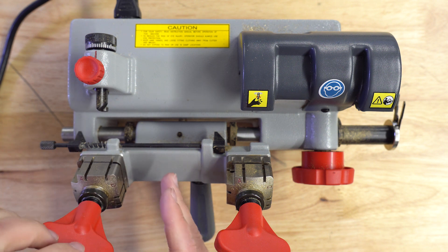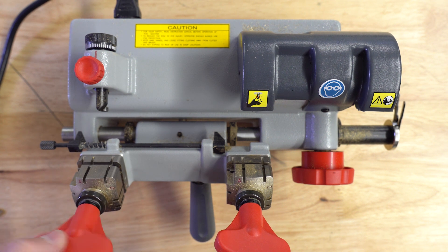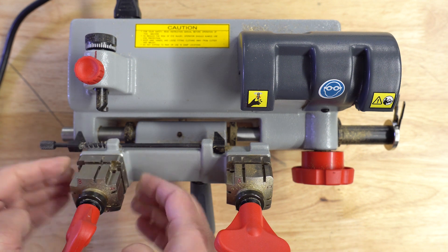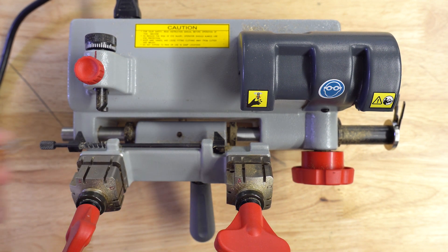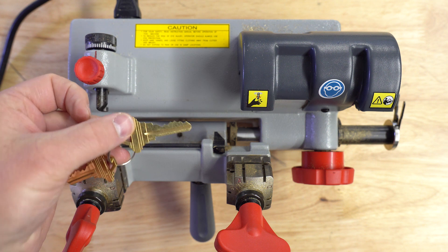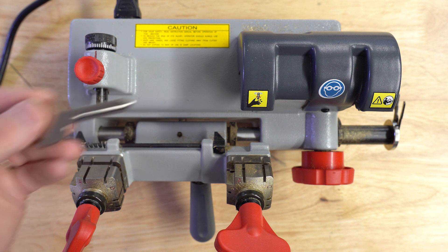As far as the jaws go, there are four-way jaws on this machine. So all you have to do is just loosen up the jaw here and you can pick both pieces up and turn it and go around to the different jaws. This is important because the jaw that you're going to cut like an SC1 key on is going to be different than what you cut this B106 key on.